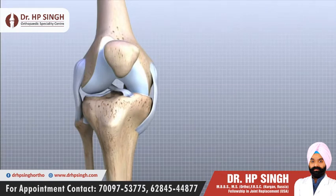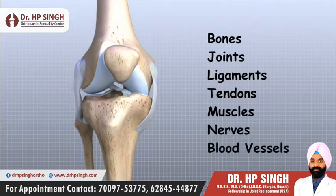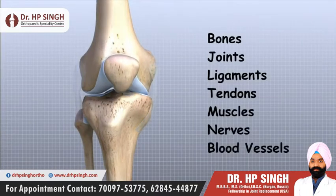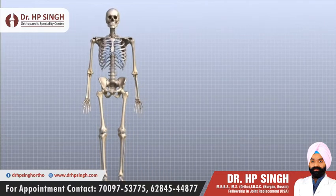The important structures of the knee can be divided into several categories. These include bones, joints, ligaments, tendons, muscles, nerves, and blood vessels. First, let's define some common anatomic terms as they relate to the knee. This will make it clearer as we talk about the structures later.